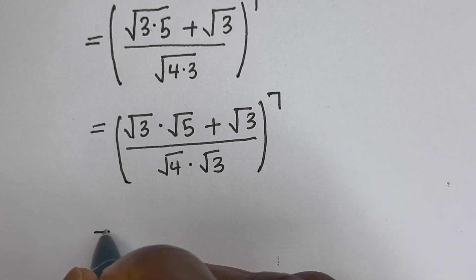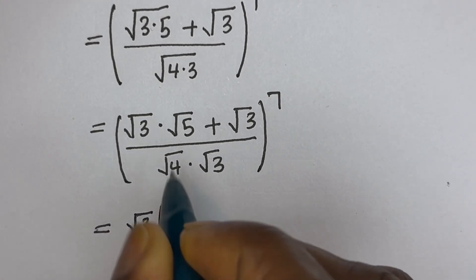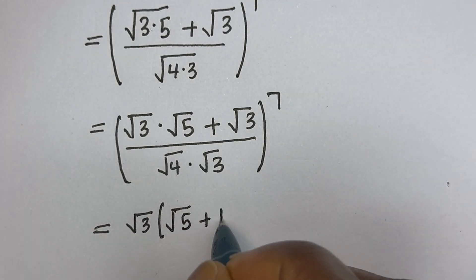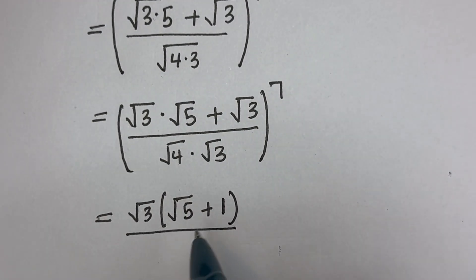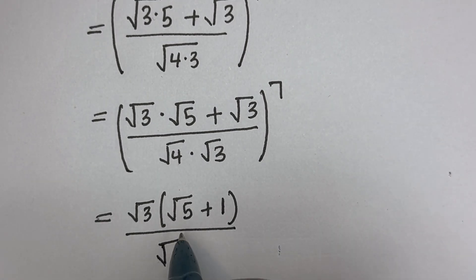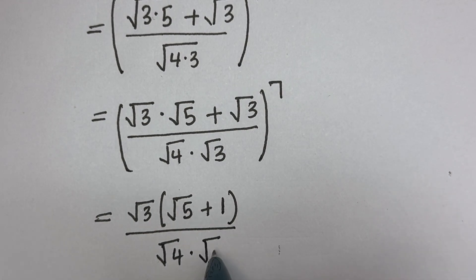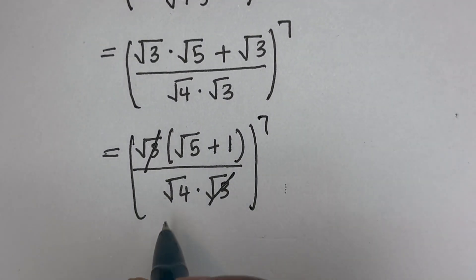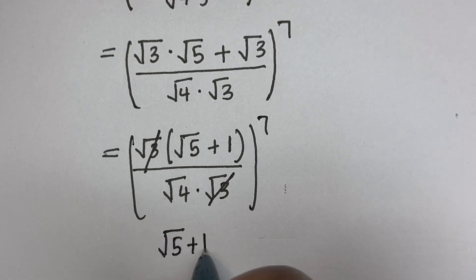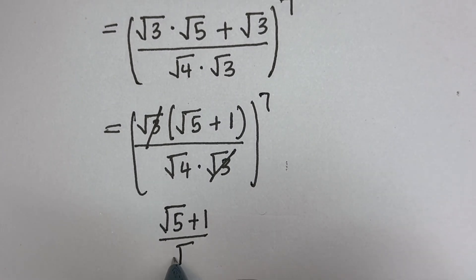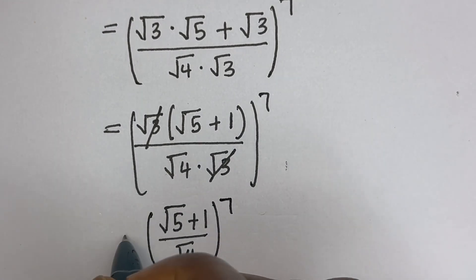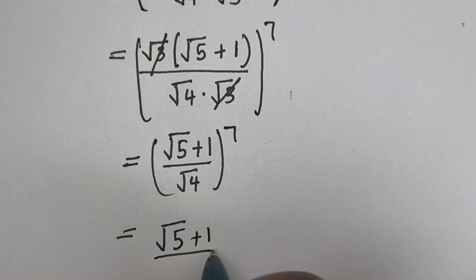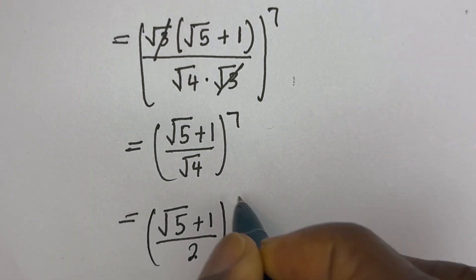Square root of 3 is common here — let's bring it out. Dividing through, we get square root of 5 plus 1, divided by square root of 4. The square root of 3 terms cancel, giving us square root of 5 plus 1, divided by square root of 4 which is 2, all to the power of 7.